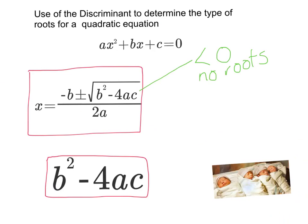What about when this bit is equal to zero? Well, that means that that will knock that bit out. So there will only be one root.